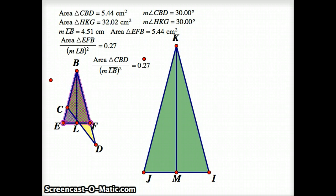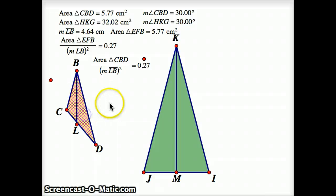It's important for the proof that the area of a triangle with some given angle — in this case angle CBD is 30 degrees — the area of that triangle will be proportional to the square of the height of the equivalent isosceles triangle.